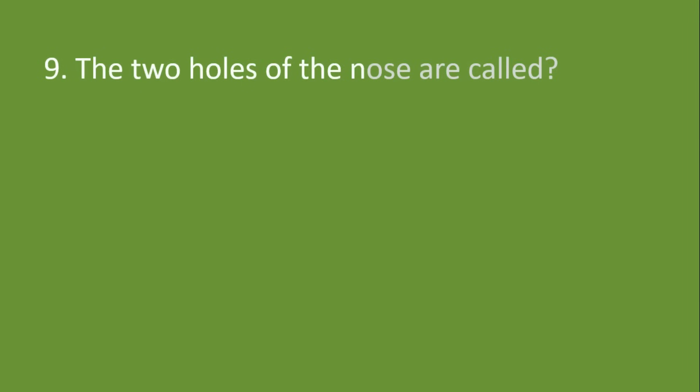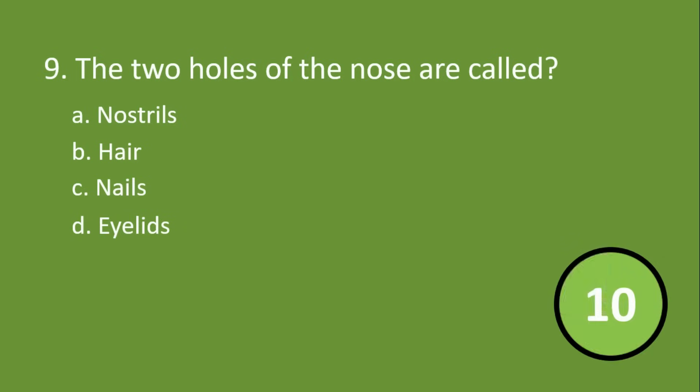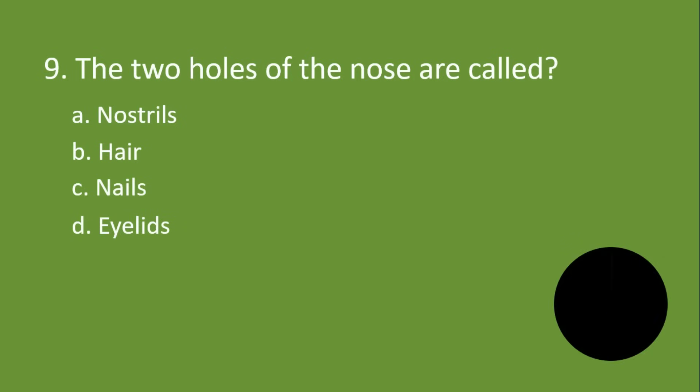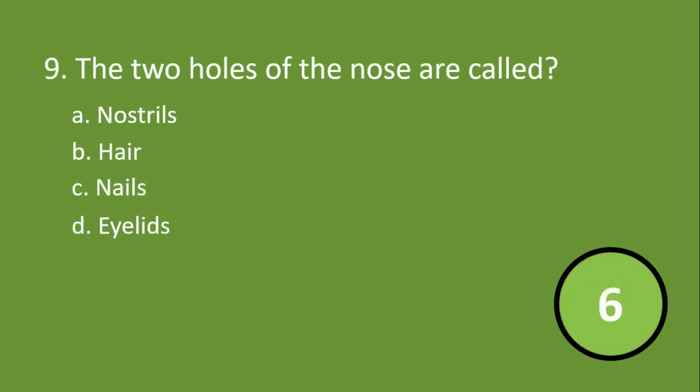The two holes of the nose are called: A. Nostrils, B. Hair, C. Nails, D. Eyelids. Answer is option A.